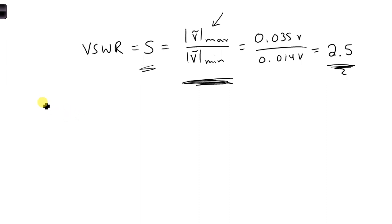So, for example, we could write Vmax is V naught plus 1 plus the voltage reflection coefficient magnitude.